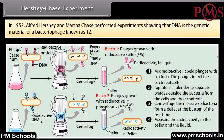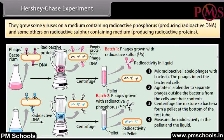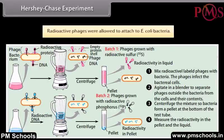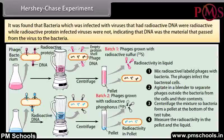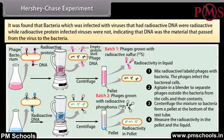In 1952, Alfred Hershey and Martha Chase performed experiments showing that DNA is the genetic material of a bacteriophage known as T2. They grew some viruses on a medium containing radioactive phosphorus, producing radioactive DNA, and others on a radioactive sulfur-containing medium, producing radioactive proteins. Radioactive phages were allowed to attach to E. coli bacteria. It was found that bacteria infected with viruses that had radioactive DNA were radioactive, while bacteria infected with radioactive protein viruses were not, indicating that DNA was the material that passed from the virus to the bacteria.